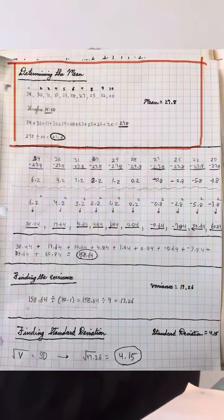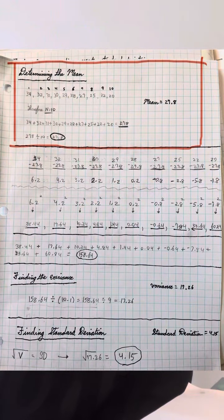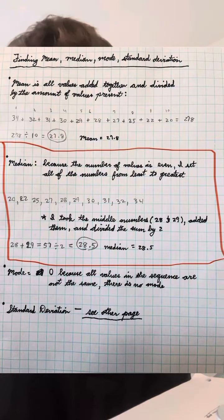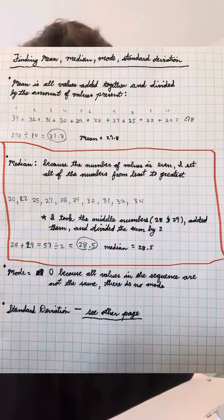I found the mean of the values by adding all the values together and then dividing it by the amount of values present. To find the median, I took the two numbers 28 and 29, took that sum, and divided it by two.